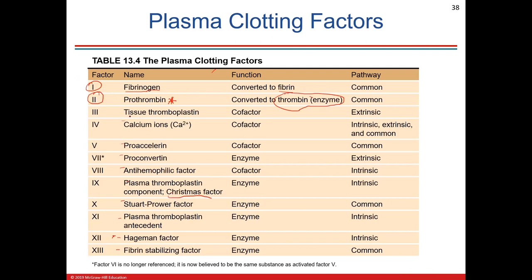An important takeaway: look at what you need as a cofactor for clotting — calcium. Calcium is important for muscle contraction, nerve conduction, blood clotting, and also for ensuring only one sperm gets into the oocyte during fertilization.